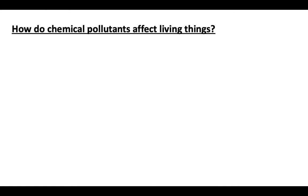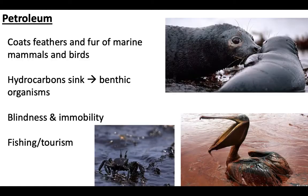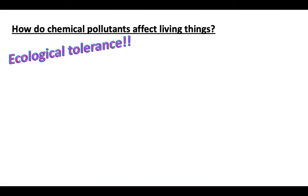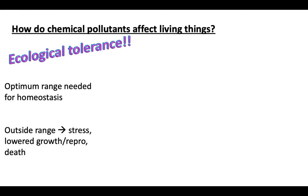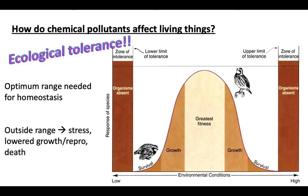Chemical pollutants can affect living things in many ways — they can smother, blind, and choke organisms, but they can also impact ecological tolerance. There's an optimum range of conditions needed for homeostasis, and if organisms are outside that range it leads to increased stress, lowered growth and reproduction, or even death. There's an ideal range where they thrive, a range where they survive, and a range outside that where they won't survive at all.